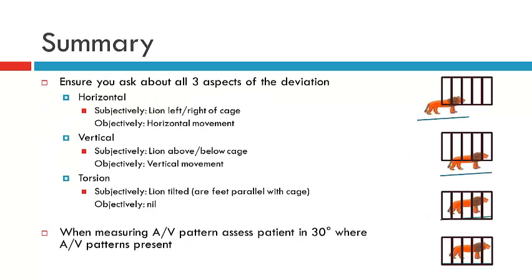In summary, ensure you ask about all three components of the potential deviation: horizontal, vertical, and torsion. When assessing the patient in each position of gaze, move the tubes 15 degrees horizontally and 15 degrees in up or down gaze. The only time we move into 30 degrees is when specifically looking for AV patterns, in which case you move the tubes 30 degrees up and 30 degrees down. That brings us to the conclusion of this video — thank you for joining us.